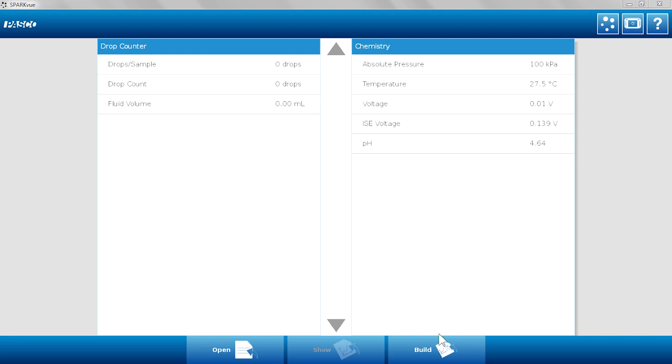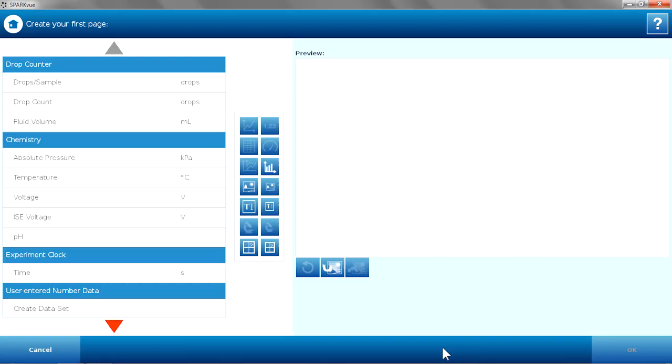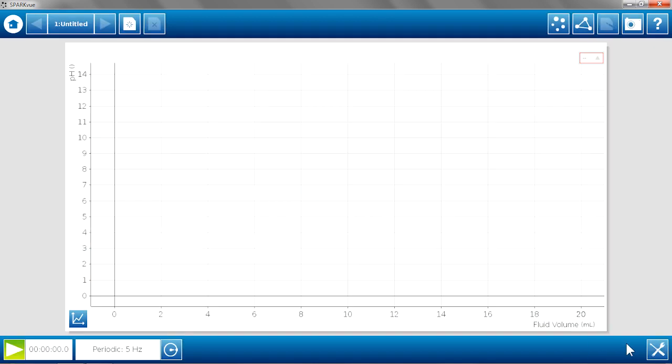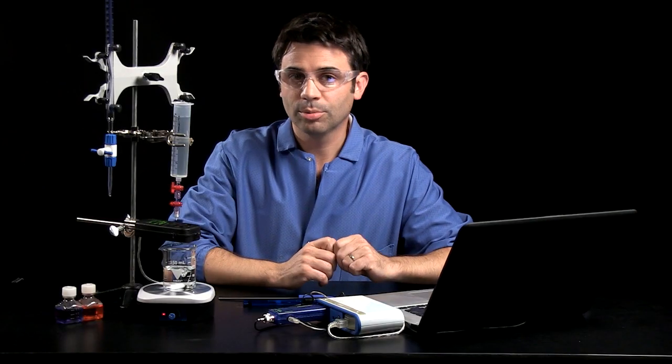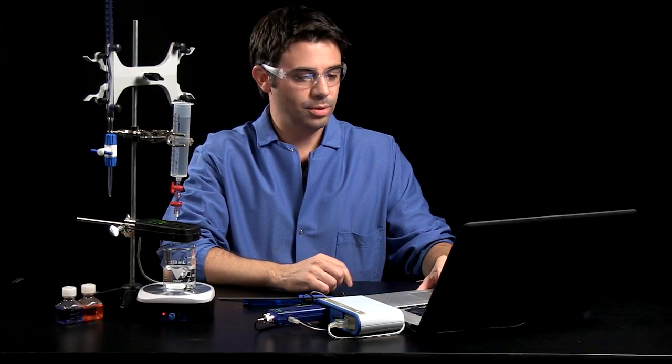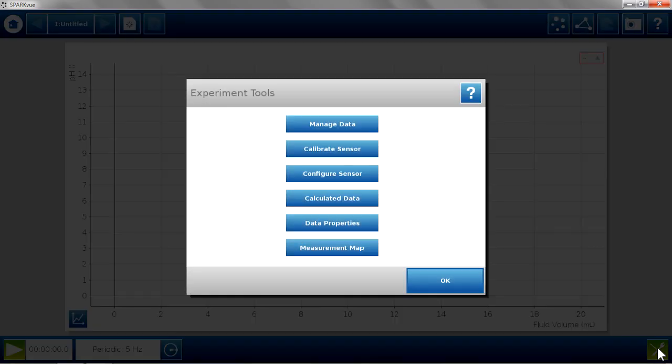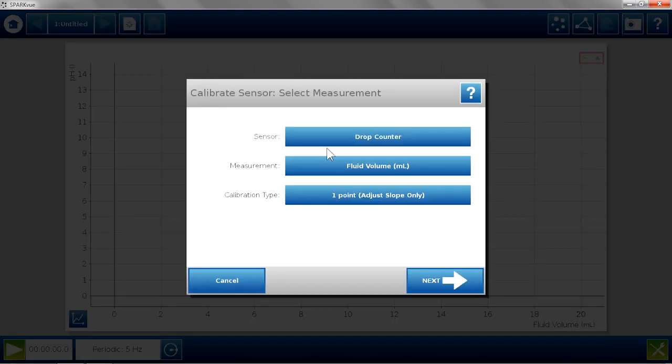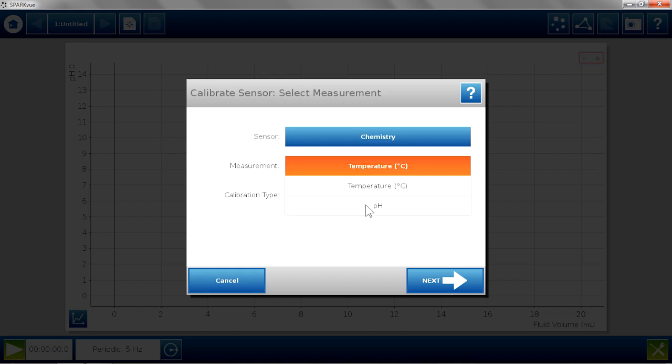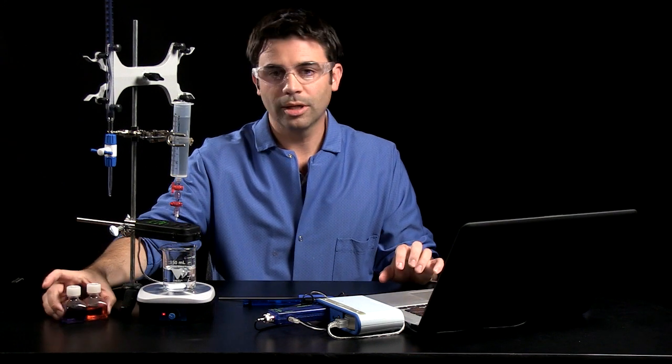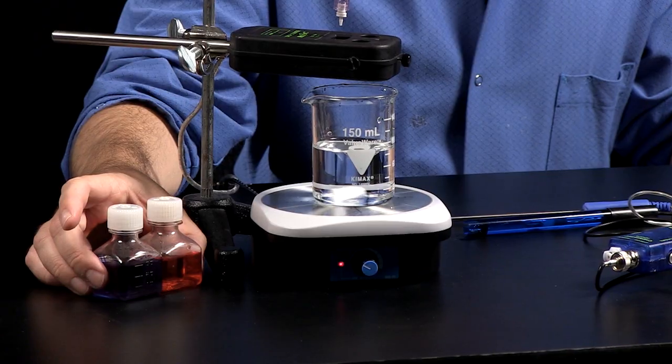I'm going to build a graph, build a page of pH versus fluid volume. Now with any titration, you want to do some calibrations beforehand. You want to calibrate the pH meter, and to calibrate in SPARC, you go to the tools and you can calibrate your sensor. In this case, I can calibrate my chemistry sensor and my pH. Now I already pre-calibrated this with my buffers 4 and 10,